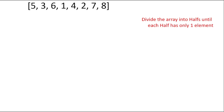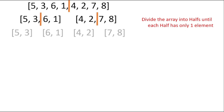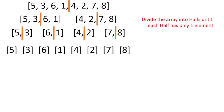We start by dividing the array from the middle, and we get a left half and a right half. We do the same again — divide them from the middle — and we keep going until we get halves where each one contains only one element, which means we cannot divide them any longer.